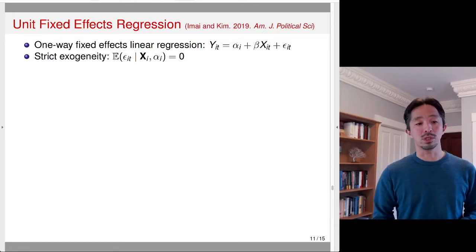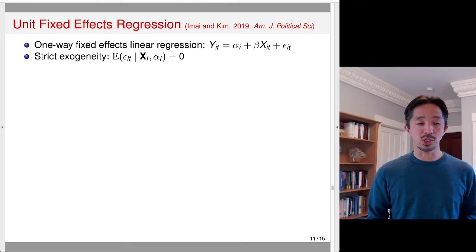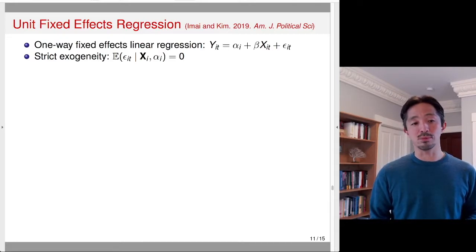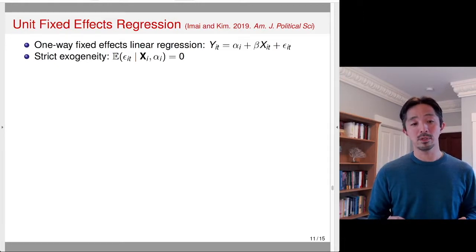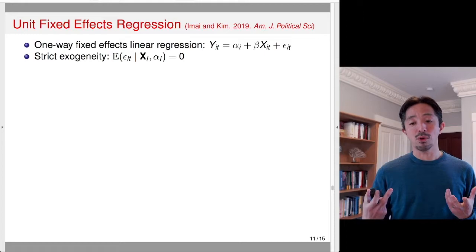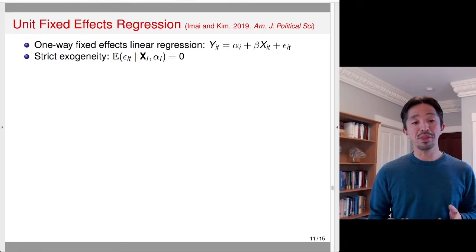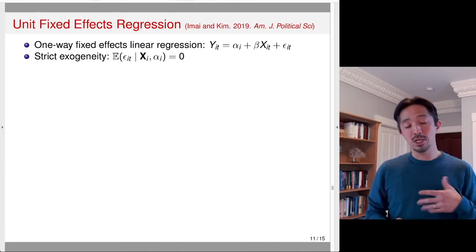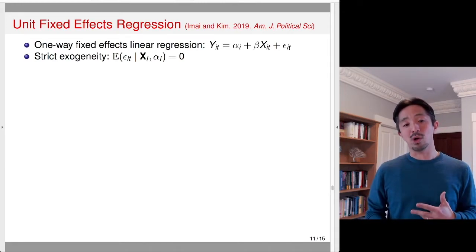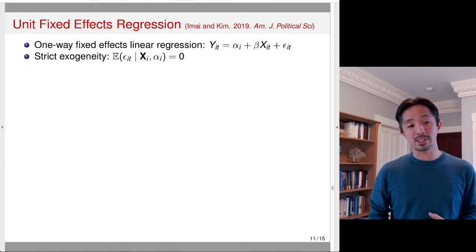Typically in a regression class you learn the strict exogeneity assumption, where the error term is independent of not only x but also the unit fixed effects — so conditional on unit fixed effects. You can think of the unit fixed effects as accounting for unobserved unit-specific time-invariant confounders. One thing to note about strict exogeneity is that x_i includes all x_it — all time periods — so the error term needs to be independent of future x_it as well as past x.